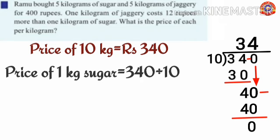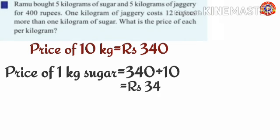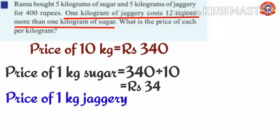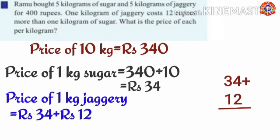It is mentioned that 1 kilogram of jaggery costs 12 rupees more than 1 kilogram of sugar. To find the price of 1 kilogram of jaggery, add 12 to 34. 34 plus 12: 4 plus 2 is 6, 3 plus 1 is 4. So the price of 1 kilogram of jaggery equals 46 rupees.